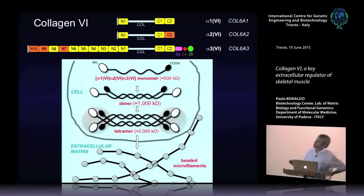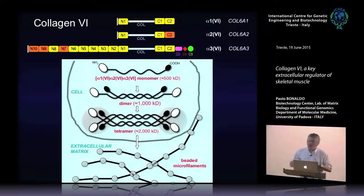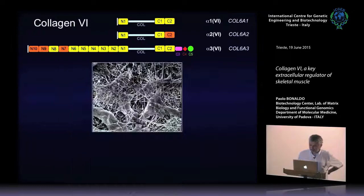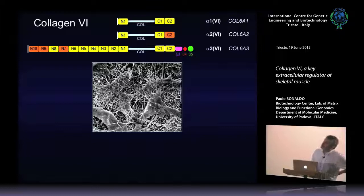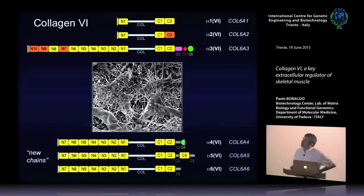Once tetramers are assembled they are secreted into the matrix, where they form the building blocks of so-called beaded microfilaments, associating laterally by non-covalent bonds forming a web. You can detect this network by different methods — here you see a cultured fibroblast with a web-like network of collagen 6 microfilaments.